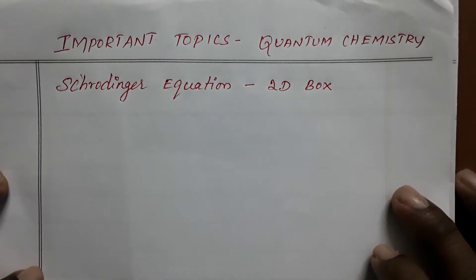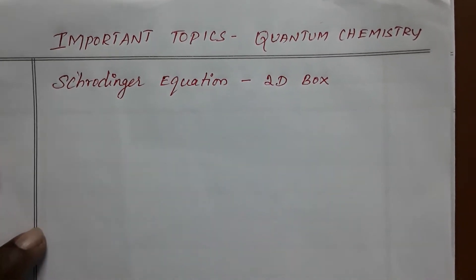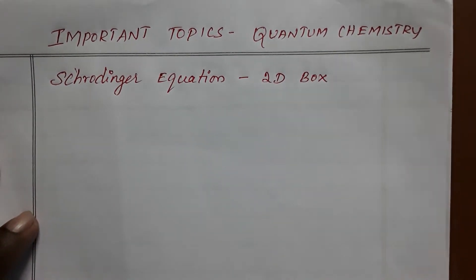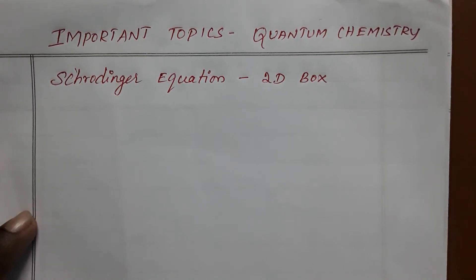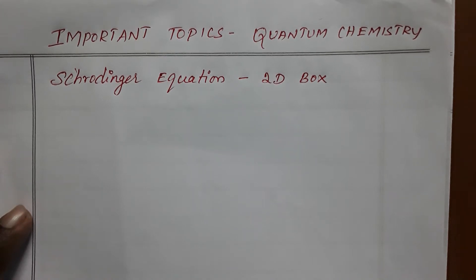Hi, this is the migration department of chemistry, St. Joseph's College. Dear students, now we are going to see an important topic in quantum chemistry: how to solve the Schrödinger wave equation for a two-dimensional box. In my previous video we solved the one-dimensional box for the wave function and energies; now we move to the two-dimensional box.